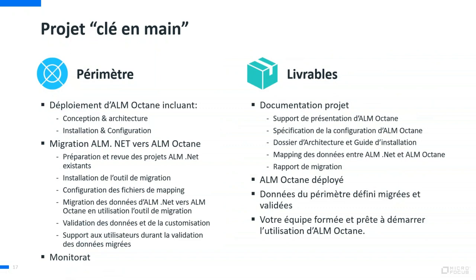Nous vous accompagnons sur des projets dits clés en main, donc au forfait. Nous avons un calculateur existant qui nous permet, à partir du volume de projets et de votre version, de revenir rapidement vers vous avec des chiffrages et estimations de budget. Le projet qu'on préconise est un déploiement de bout en bout : la conception — spécification des customisations ALM Octane et architecture du produit — son installation, sa configuration, et la réalisation de la migration des données de ALM.NET vers Octane.